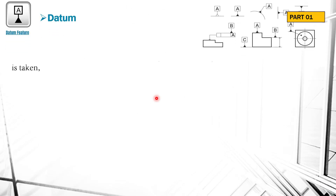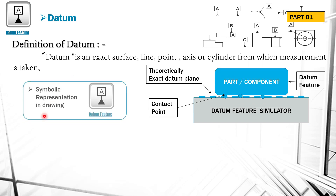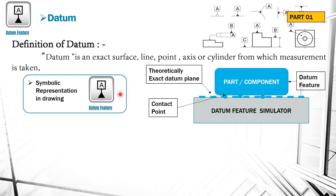Next is the datum. The datum is the exact surface, line, point, axis, or cylinder from which measurement is to be taken. This is the symbolic representation of the datum. 'A' indicates it is the first datum. If different datums are required in the drawing, we can go for B, C as per our requirement. So 'A' is the first datum, 'B' is the second datum, and the bottom surface is the 'C' datum. There are different representations as per the standards, including cylindrical datum.